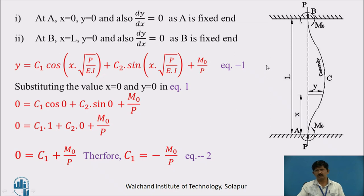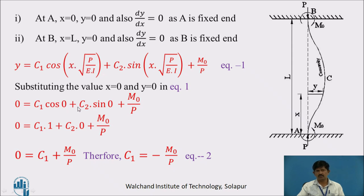Applying boundary conditions: since end A is fixed, at x = 0, deflection y = 0 and slope dy/dx = 0. Similarly, at x = L (point B), y = 0 and dy/dx = 0. Substituting x = 0 and y = 0 into equation 1: 0 = C₁·cos(0) + C₂·sin(0) + M₀/P. Since cos(0) = 1 and sin(0) = 0, we get 0 = C₁ + M₀/P, therefore C₁ = −M₀/P. This is equation 2.